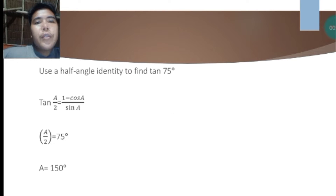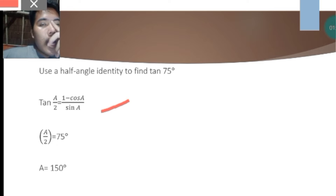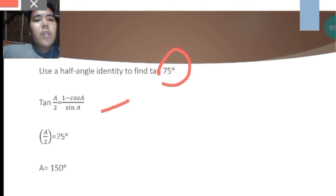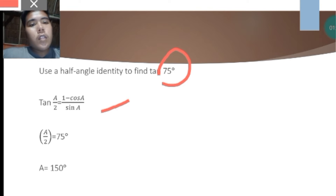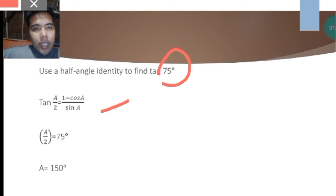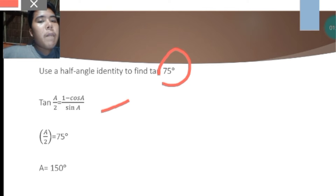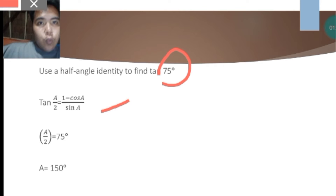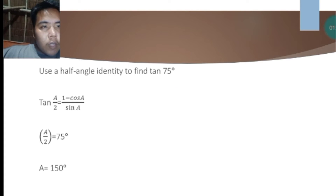For example, use a half-angle identity to find tan 75 degrees. We have the formula: tan(a/2) equals 1 minus cosine a over sine a. First, we find the value of a. Since a/2 equals 75, we cross multiply: 75 times 2 gives us 150. So the value of a is 150 degrees. The purpose of finding a is so we can substitute it into cosine a and sine a.